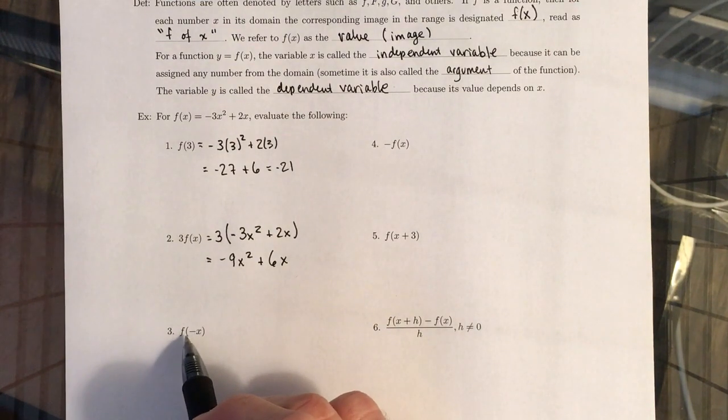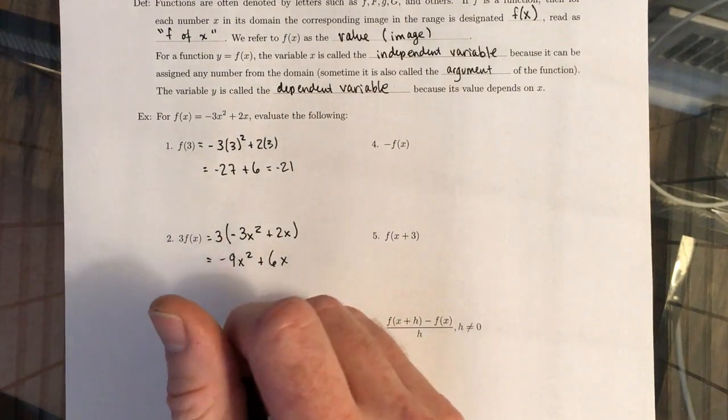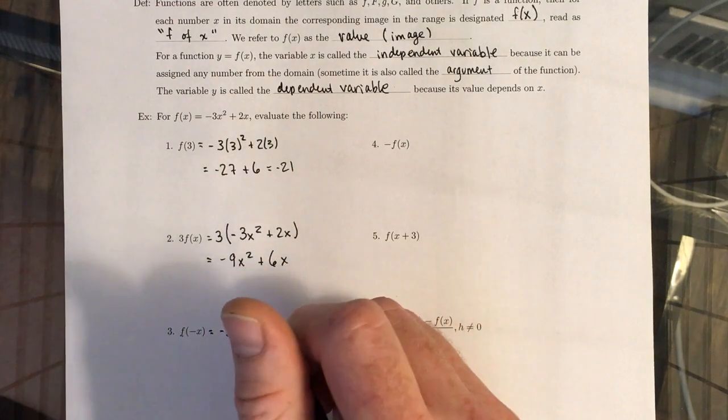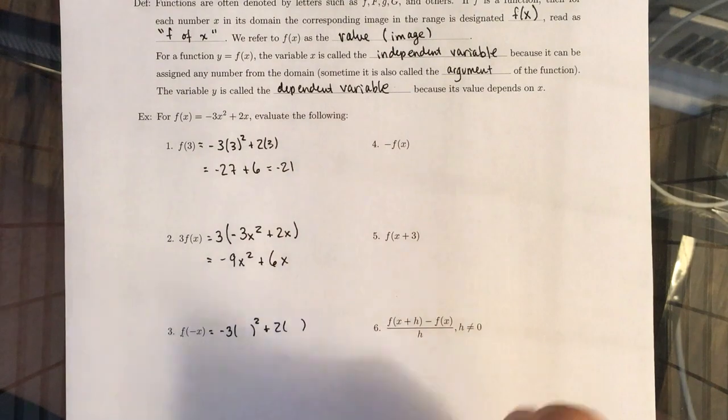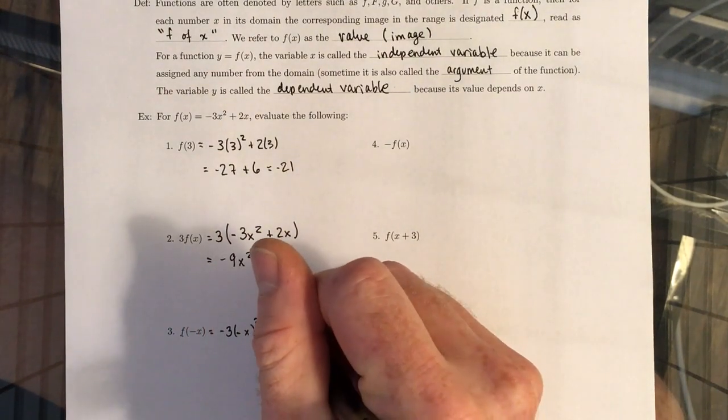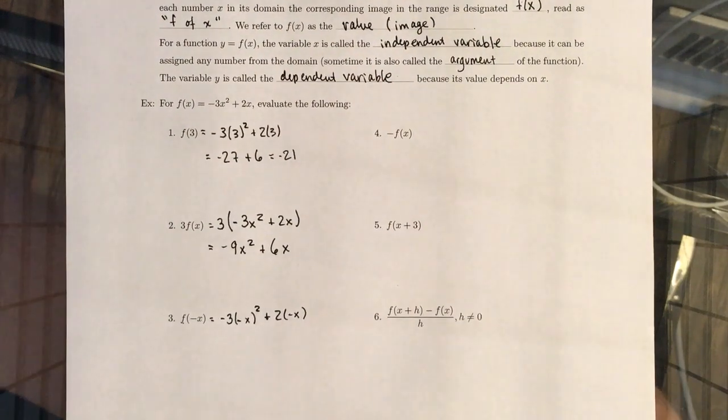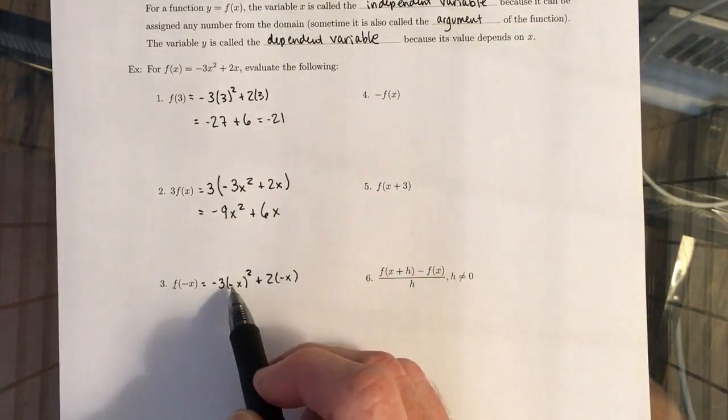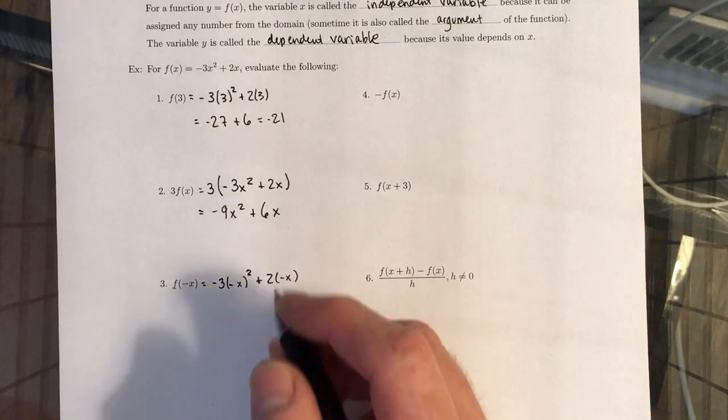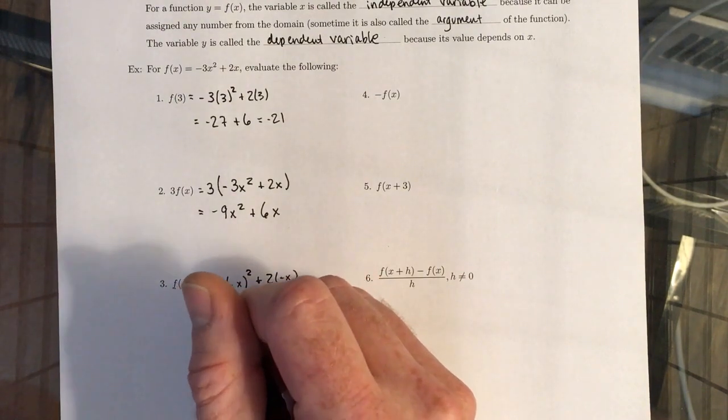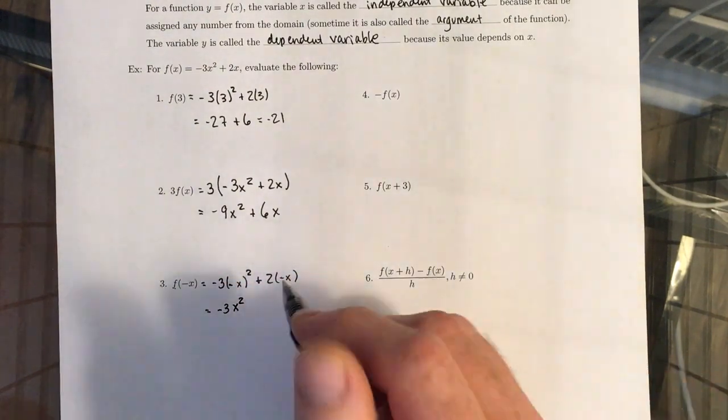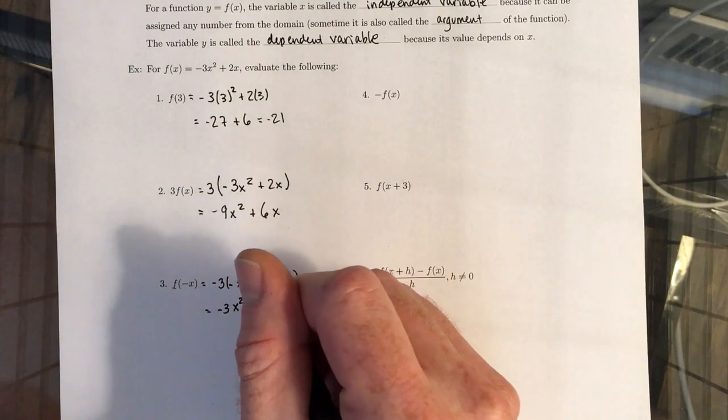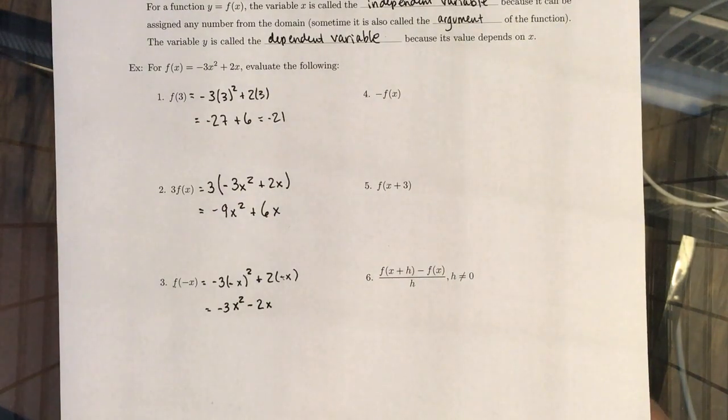Next, we want to plug in negative X into the function F. So to do that, we're first going to take the function. Everywhere we have an X, we just put a couple parentheses. And inside the parentheses, we just put in negative X. And we have to be careful about the order of operations. So we need to take care of exponents before we take care of multiplication. If you take negative X and you square it, you end up just getting regular X squared back out. So, and then you multiply by negative 3. And now, since you have 2 times negative X, you can take that negative out front. And we end up getting negative 3X squared minus 2X.